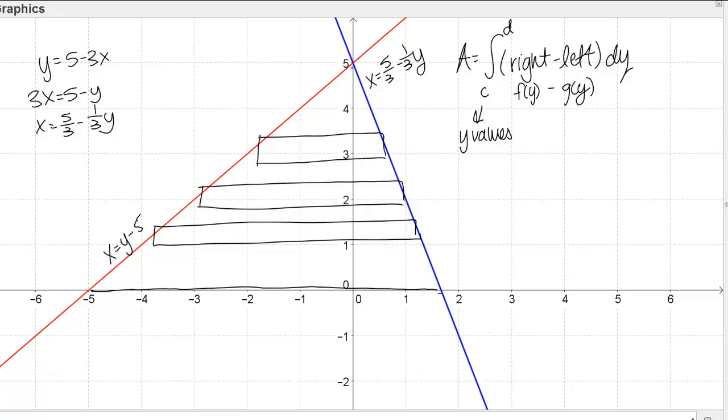I can start setting up my integral. Let's leave the bounds off for a minute. We'll think about those in a second. Let's go ahead and fill in our functions. My right function, which is this blue line over here, I just figured out that that was 5 thirds minus 1 third y minus my left function, which is my red line over here. I just determined that that was the function y minus 5. I'm integrating with respect to y. Notice here that everything in my integral is a y. That's really important.